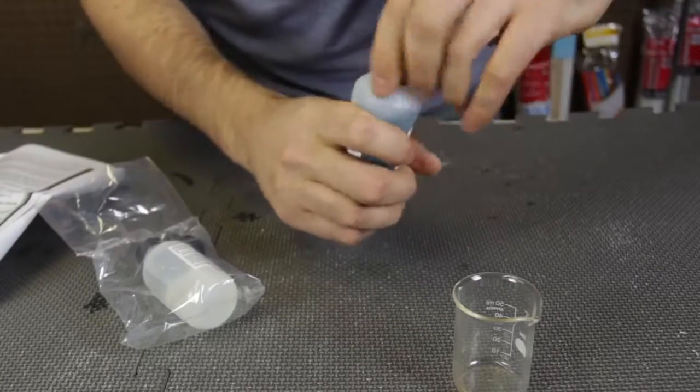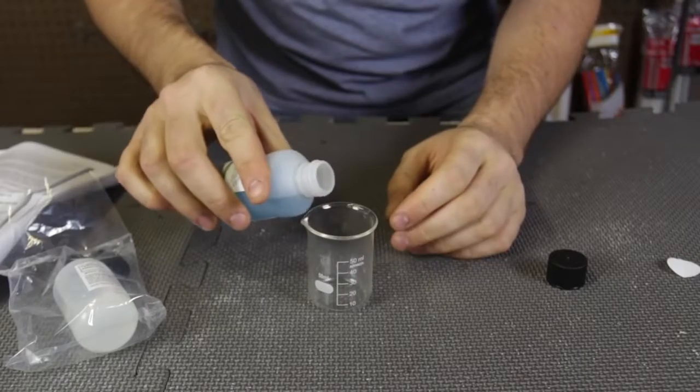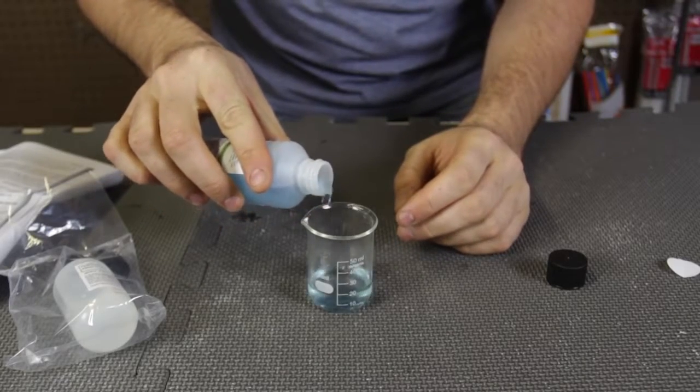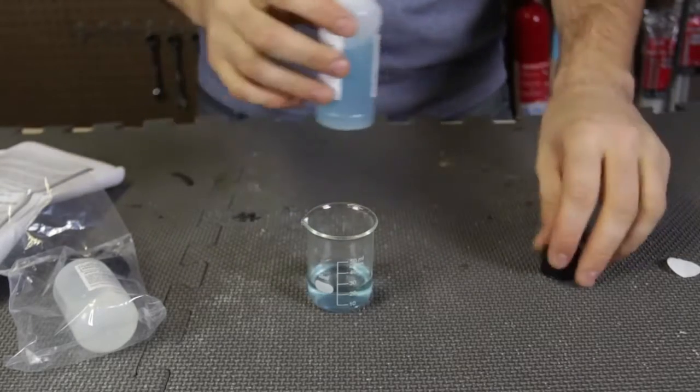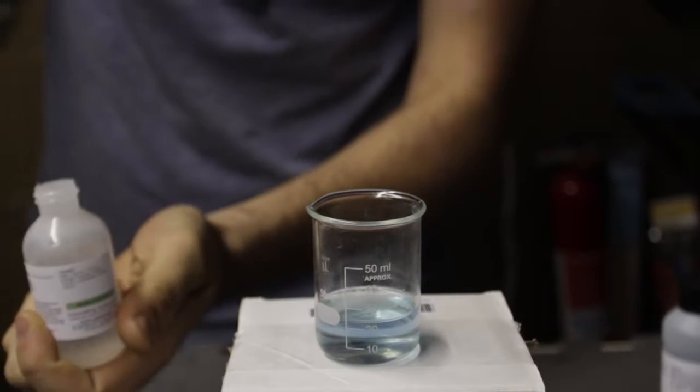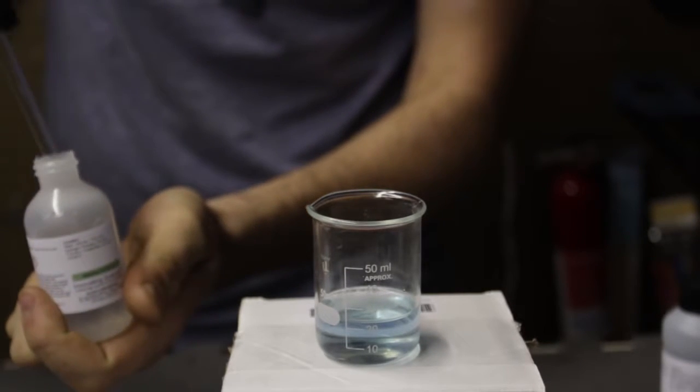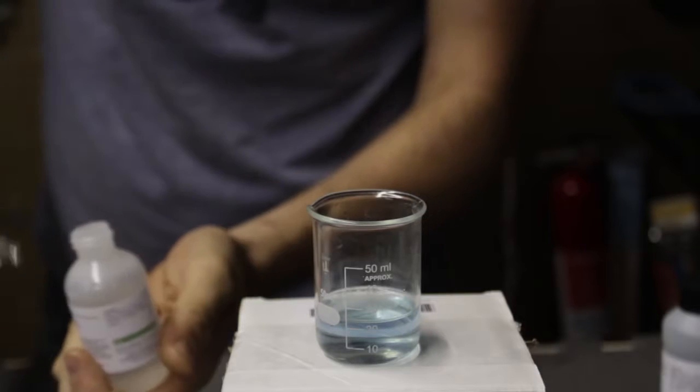So first of all, I've got to put this luminol solution, about 20 milliliters, in there. Boom, just like that. And then they say approximately one milliliter of hydrogen peroxide.